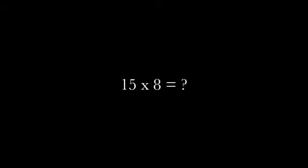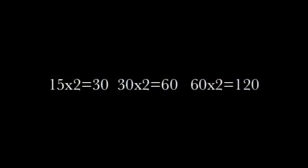So 15 times eight is double, double, double. Double 15 is 30, double 30 is 60, double 60 is 120. So 15 times eight is 120.